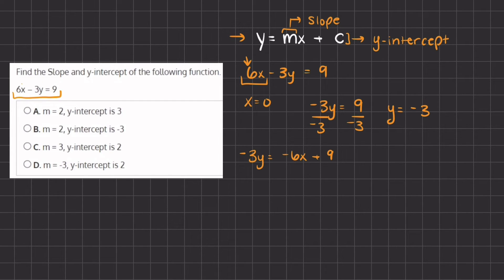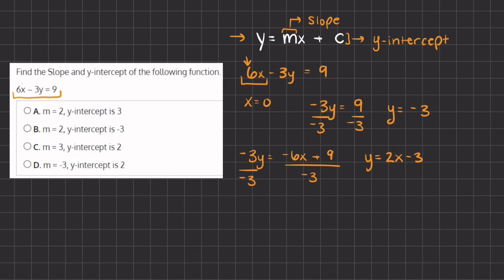Now in order to be completely in slope-intercept form, we need to isolate y. We divide by negative 3 on both sides and we are left with y equals negative 6 divided by negative 3, which gives us positive 2x, and positive 9 divided by negative 3 gives us negative 3. So now we can tell that our coefficient in front of x is 2, so our slope is 2, and our y-intercept is negative 3.